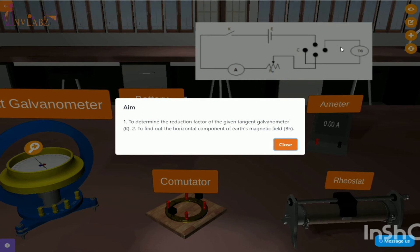The experiment aim is to determine the reduction factor of the given tangent galvanometer and to find out the horizontal component of Earth's magnetic field.